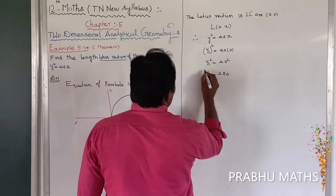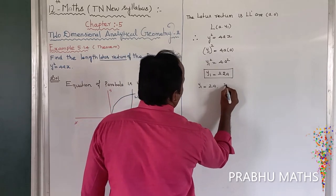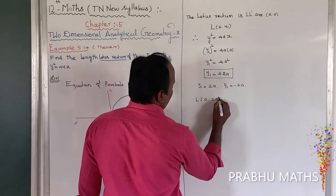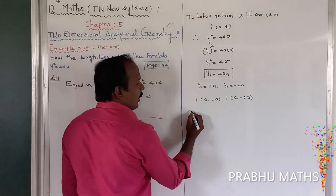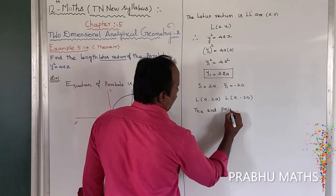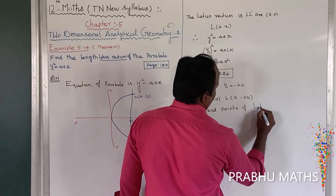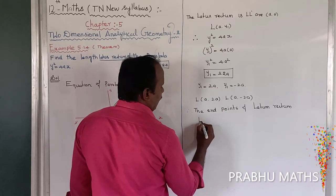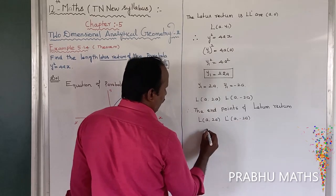So y1² = 4a². Therefore y1 = ±2a. This gives y1 = 2a and y1 = -2a. The endpoints of the latus rectum are L(a, 2a) and L'(a, -2a).